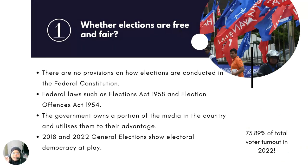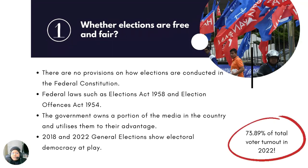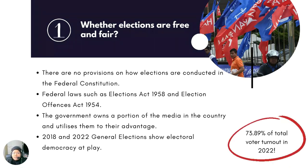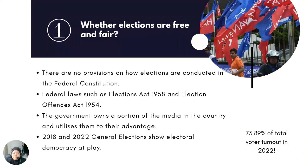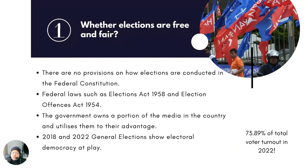However, there are some points raised to contend the claim that elections in Malaysia are free and fair. One such argument is that the government owns a portion of the media in the country and has utilised these platforms to influence the average voter to vote in their favour. However, we would like to point out a different view. The 2018 and 2022 general elections have shown that voters are free to choose who they want as their representatives and government of the day. What makes the 2018 general election particularly significant is that the ruling party of 60 years was voted out and a different administration came in, showing that democracy was successfully at play. Furthermore, voters are not forced to go out and vote, as seen by the percentage of total voter turnout — in the 2022 election, the percentage was 73.89%.